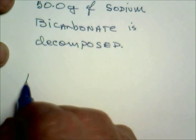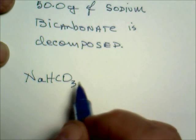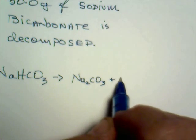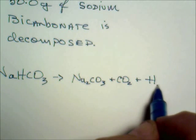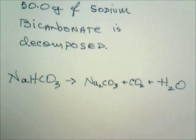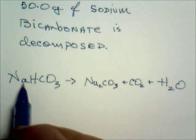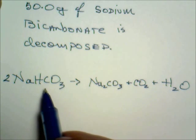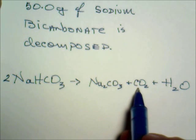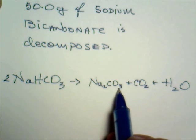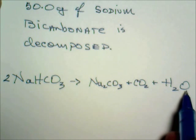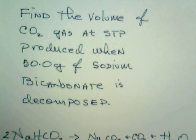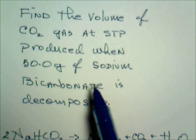We write the formula for sodium bicarbonate, which decomposes to make sodium carbonate, carbon dioxide gas, and water. We've got two sodiums on the product side, so we place a 2 in front of NaHCO₃. That gives two hydrogens and two carbons. Checking oxygens: three plus two plus one equals six on each side — the equation is balanced.